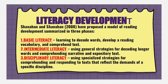The first stage is basic literacy — learning to decode words, develop a reading vocabulary, and comprehend text. The next is intermediate literacy — using general strategies for decoding longer words and comprehending narrative and expository text. And last is disciplinary literacy — using specialized strategies for comprehending and responding to text that reflects the demands of a specific discipline.